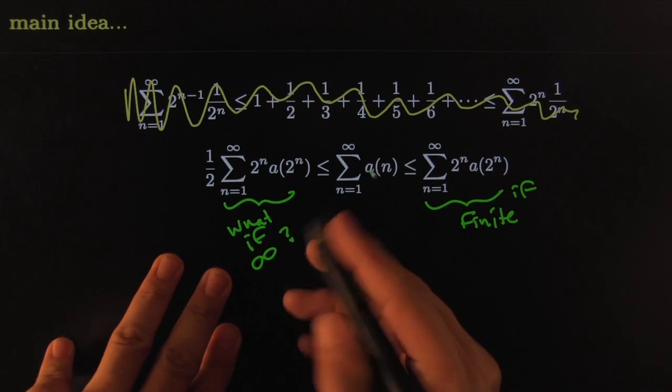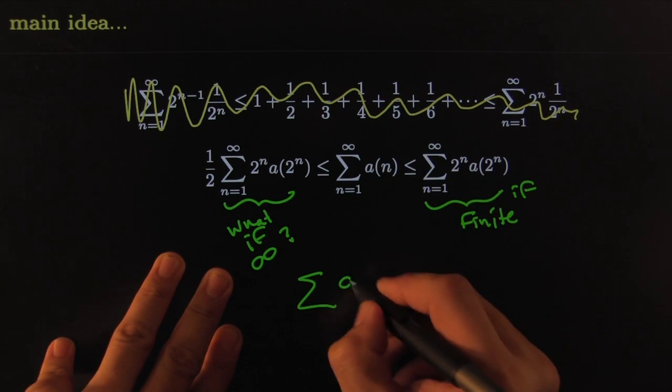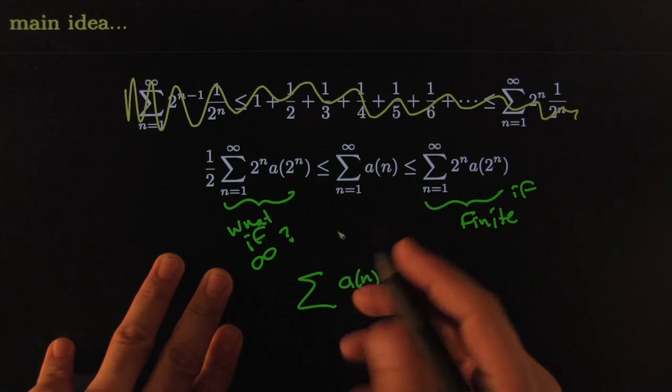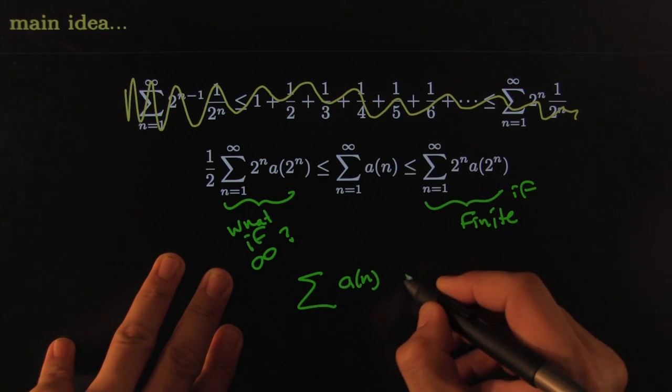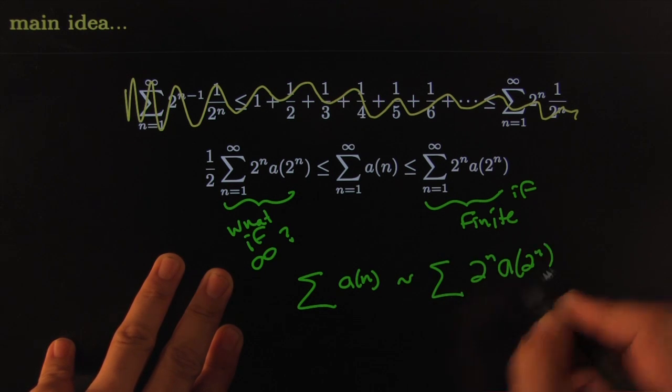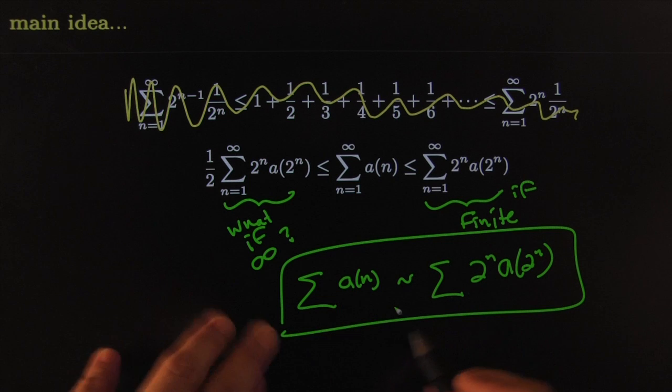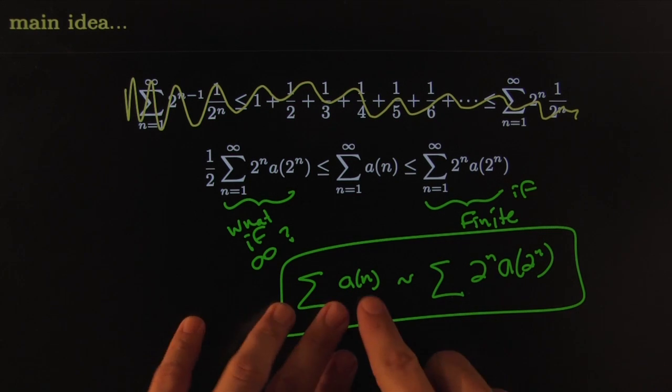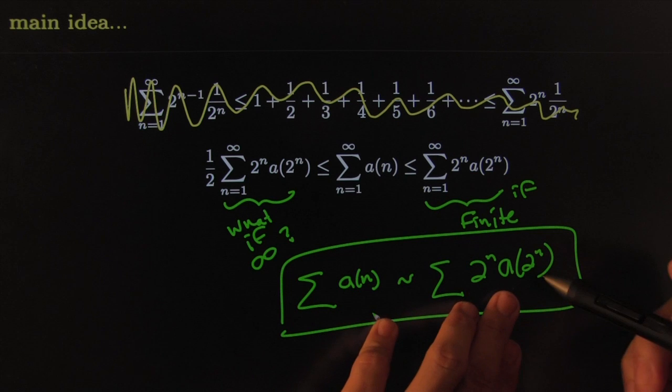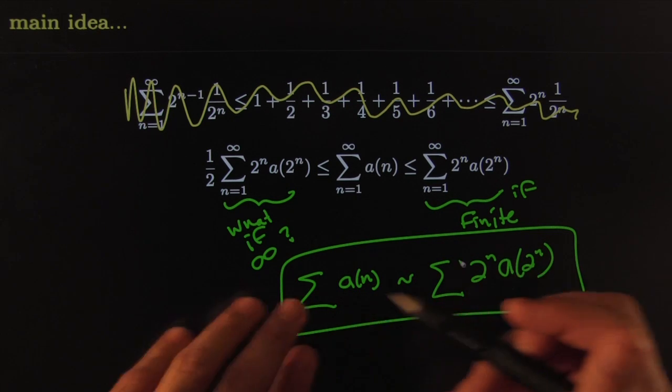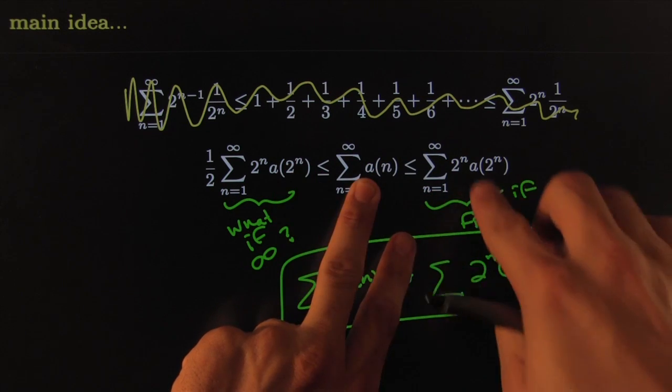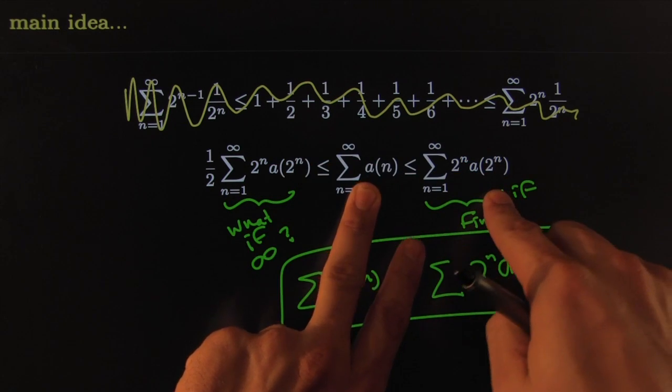This forces you to the following corner. It says that under these conditions, whenever a(n) is positive and decreasing, all throughout we needed a(n) to be monotone and decreasing, a(n) behaves very much like 2 to the n times a(2^n). That my friends, that's the punchline right there. That another way to see what a(n) does is to look at the condensed version, the groups of 2^n of them, in this way. And whatever this one does, that one will do, based on the strapping of it on either side by variations of the condensed version of the sequence. It's brilliant. Amazing.